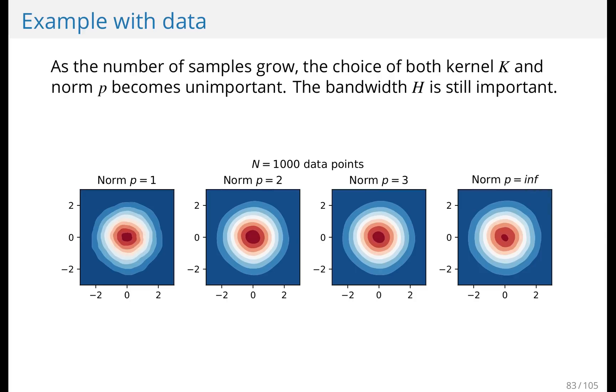The bandwidth is still important. And in higher dimensions, the bandwidth is not necessarily a number anymore. It could be a matrix because you could have different bandwidths in different directions. And it doesn't really have to be aligned with the principal axis. So you could have a matrix of bandwidths in the higher dimensional case, a D times D matrix in D dimensions.